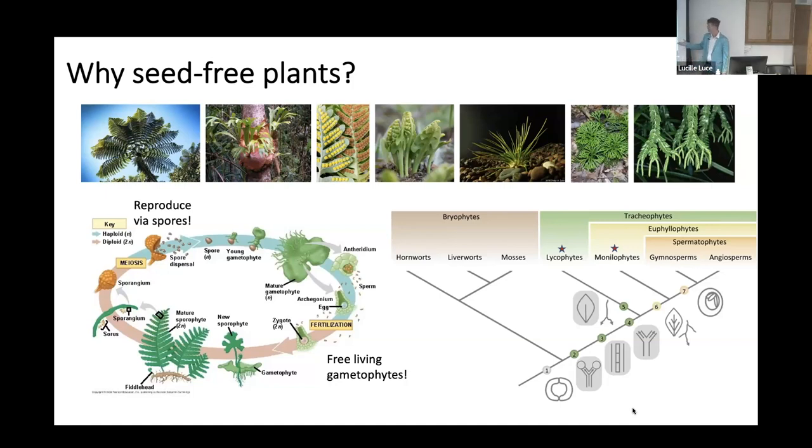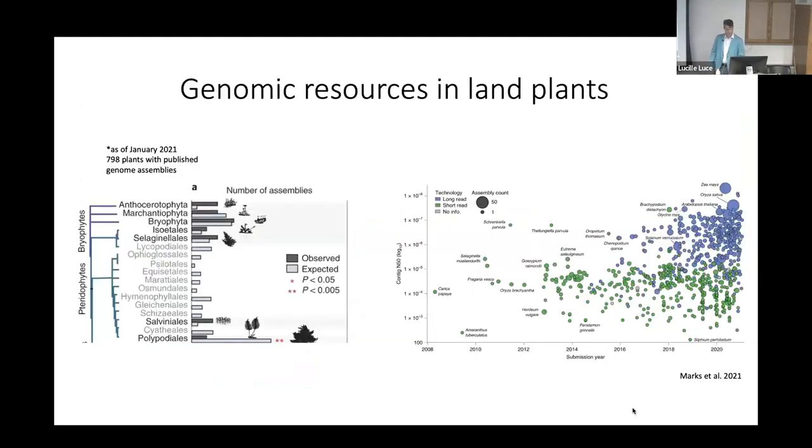They're also evolutionarily important. Ferns are the sister lineage to all seed plants, and lycophytes are sister to all other vascular plants. They've retained important ancestral traits like vasculature and sporophyte branching, and have independently evolved key features like roots and leaves. We're making comparisons that can help give us an idea about the hidden processes that guide evolution.